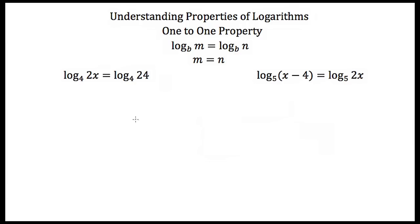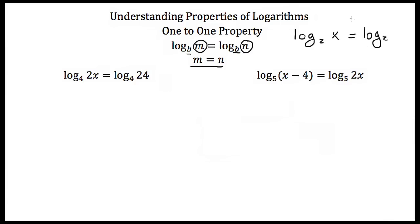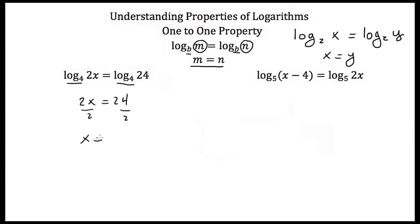The next thing we're going to talk about is the one-to-one property. Logarithms are one-to-one functions. So if you ever see the log with some base of some number equal to the log with the same base of a different number, then these two numbers must be equal. For example, if we have log base 4 of 2x equal to the log base 4 of 24, then 2x must equal 24. Divide both sides by 2, and x is equal to 12.